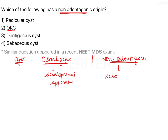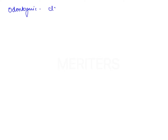Some examples of non-odontogenic cysts include the nasopalatine duct cyst, nasolabial cyst, median palatal cyst, and globulomaxillary cyst. Now we are going to discuss odontogenic cysts specifically regarding their classification, so that once we are familiar with the different odontogenic cysts, it will be easy to rule out the non-odontogenic cyst from the given options using the exclusion method.